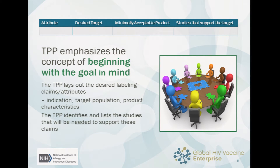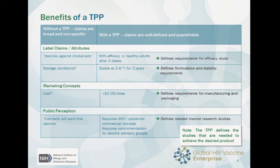A lot of the target product profiles that people use now have two columns: one for your desired or optimal target, and one that lists a minimally acceptable product. The point of the TPP is to lay out what you want at the beginning — it's the concept of beginning with the goal in mind — and to identify the studies you need to reach the label claims that you're interested in.